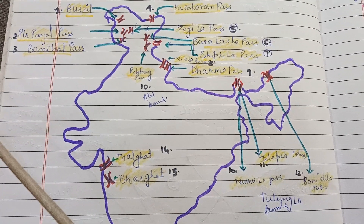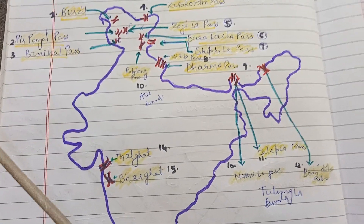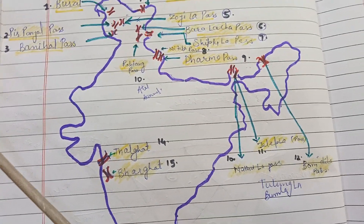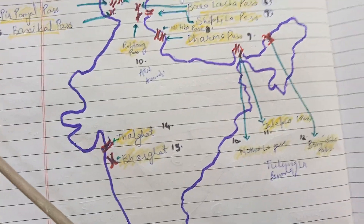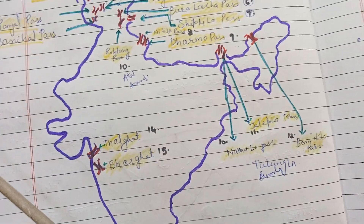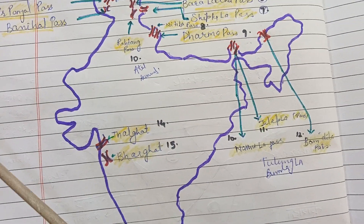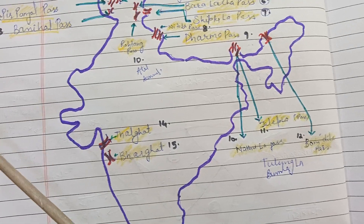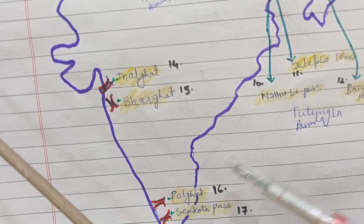Good morning again with another video. Today we are going to learn about passes. As we know, passes means Dara. In the southern part, we have already learned about 4-5 passes.